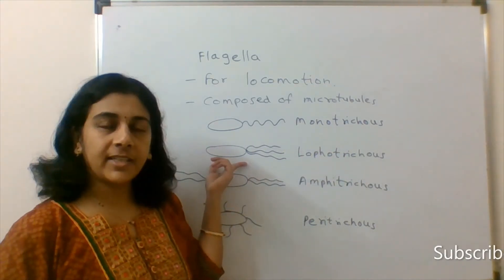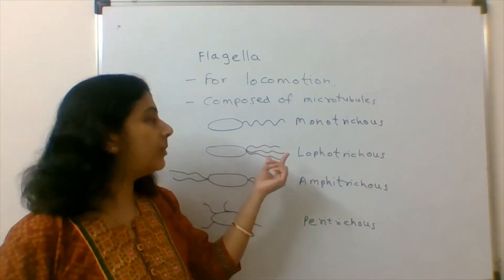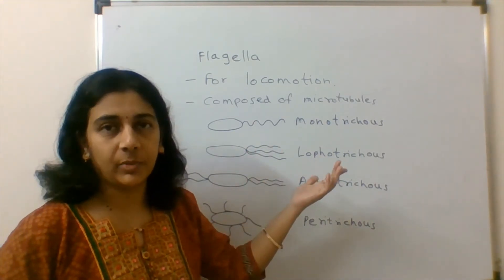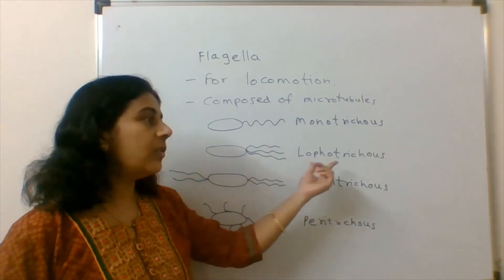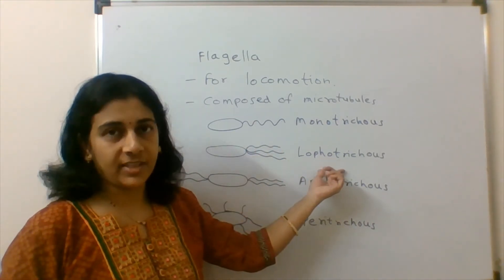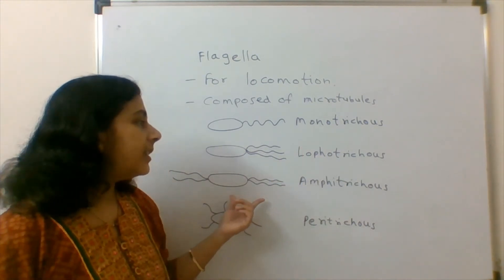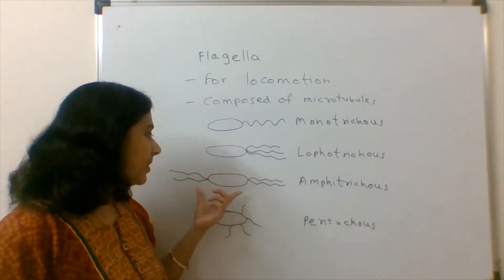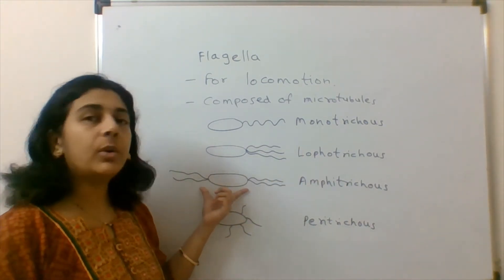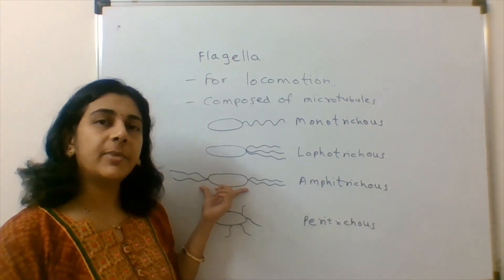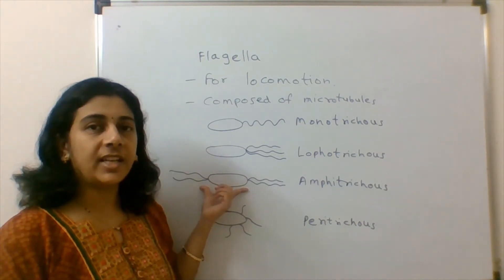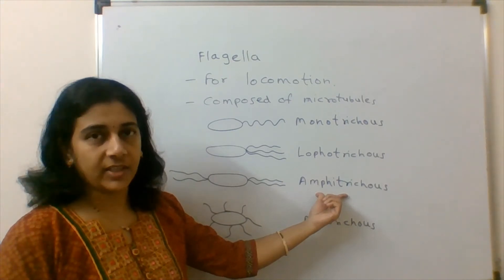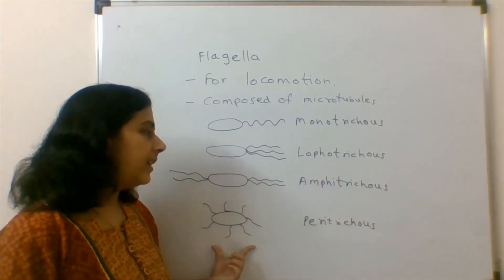In case of lophotrichous flagella, there are more than one flagella present at the single pole, and we call it lophotrichous flagella. Then, the next type is amphitrichous. Amphitrichous means at both poles there is a presence of flagella, and we call it amphitrichous flagella.